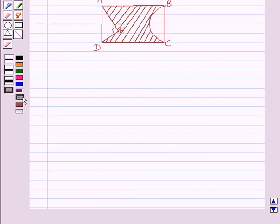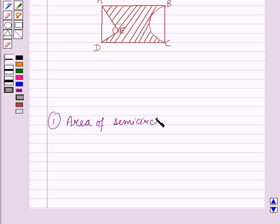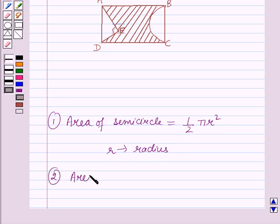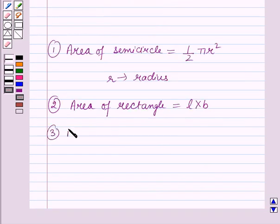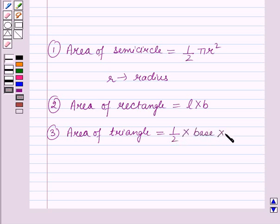Before starting the solution we should know some key results. First, the area of a semicircle is equal to 1/2 × π × r², where r is the radius of the circle. Second, the area of a rectangle is equal to length × breadth. And the area of a triangle is equal to 1/2 × base × height.